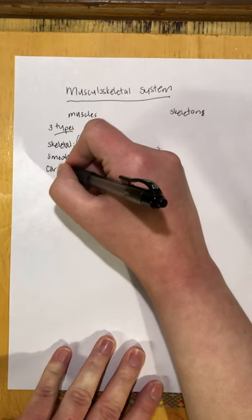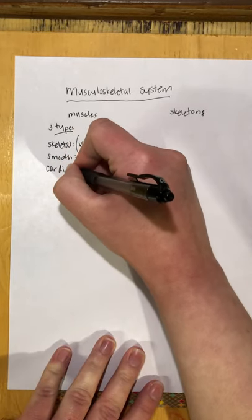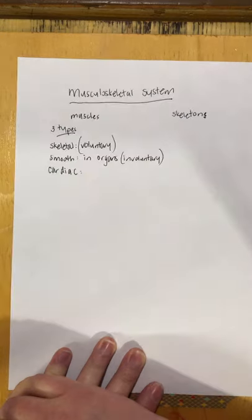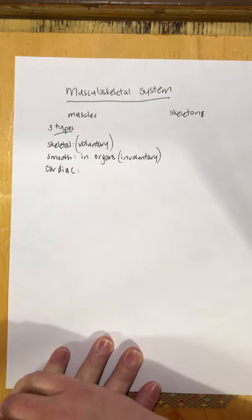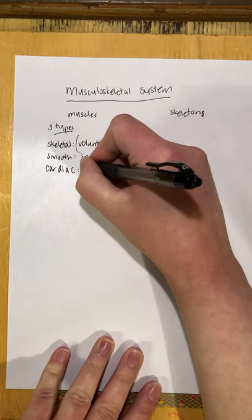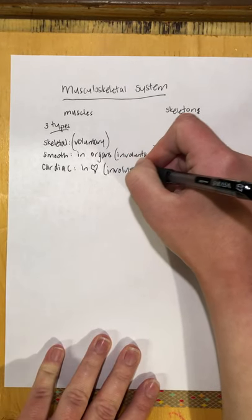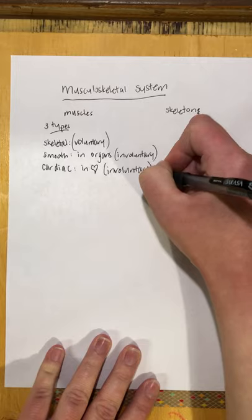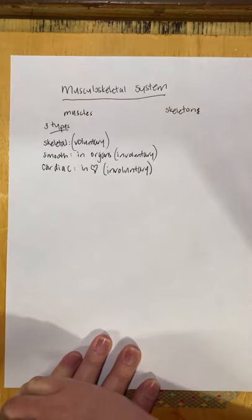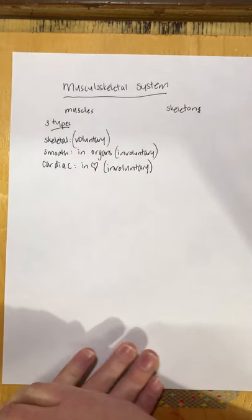Our third type — any guesses where it's located? It's cardiac muscle. We remember from our roots that 'cardi' is for the heart, so cardiac muscle is in the heart. These are also involuntary — we don't have to tell our heart to beat; it just goes ahead and does it.